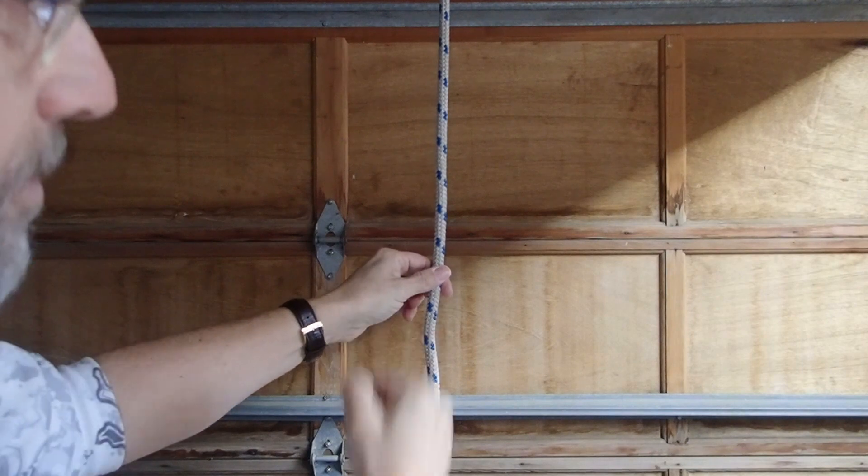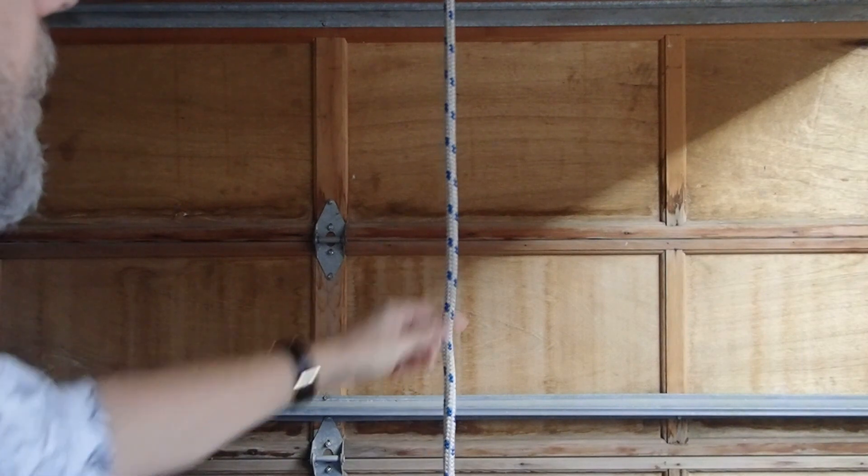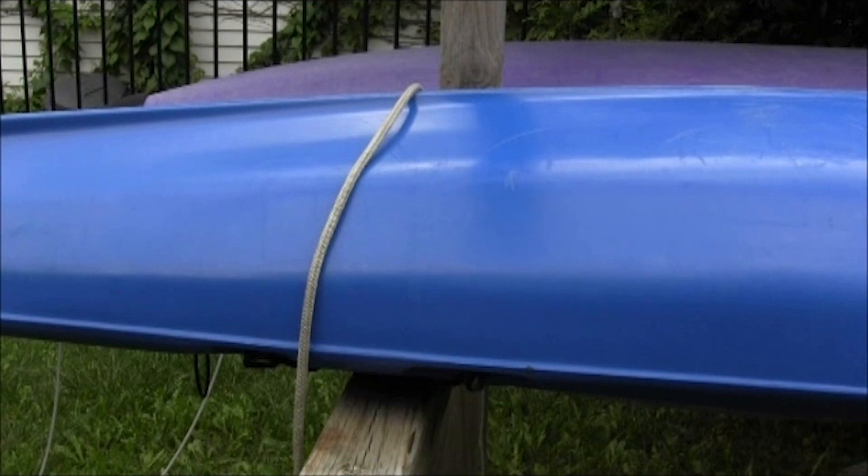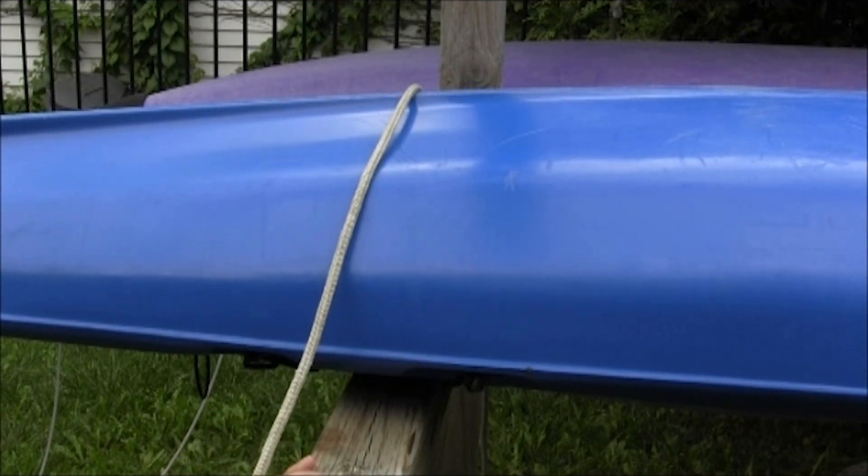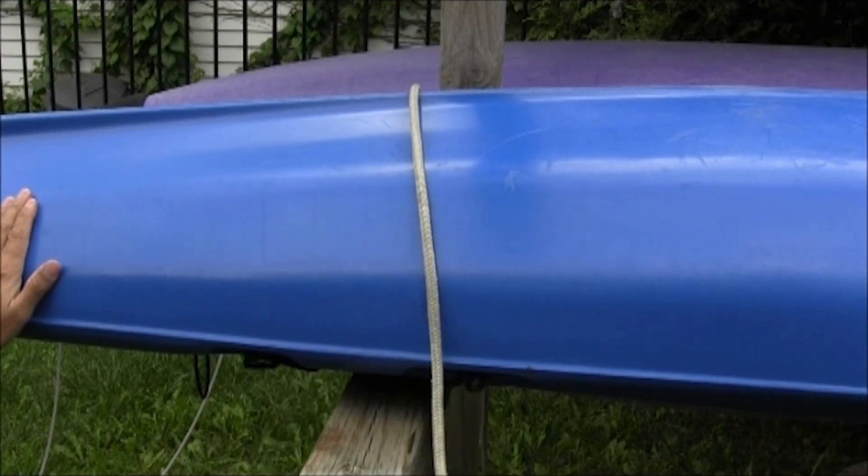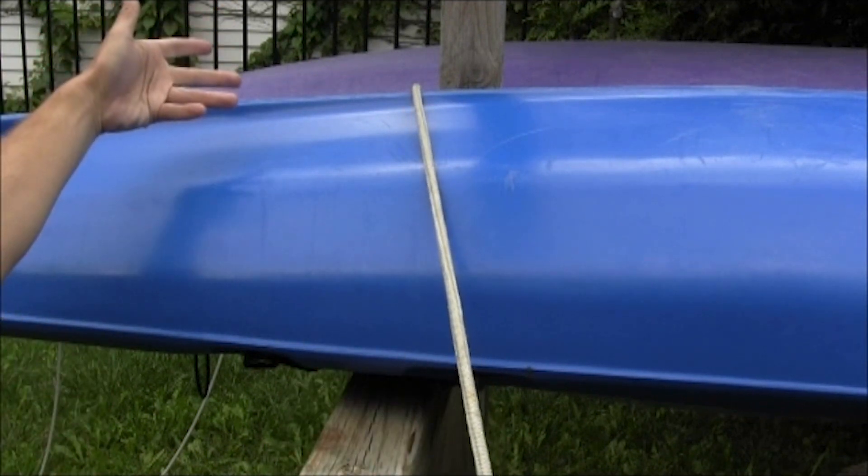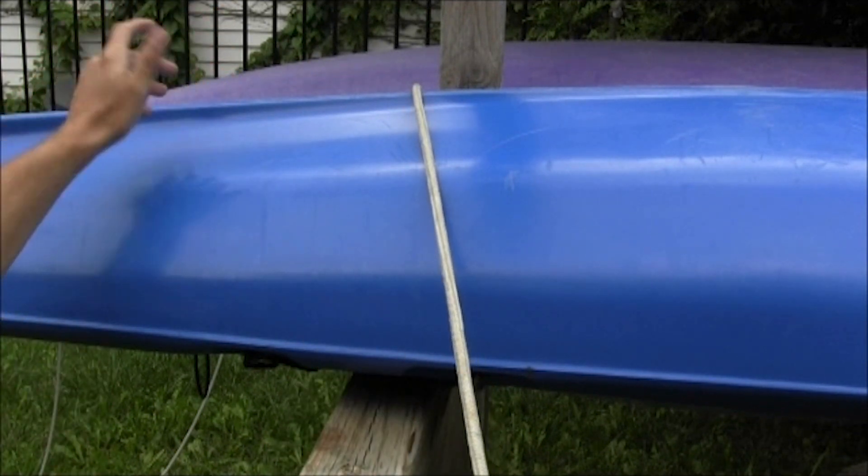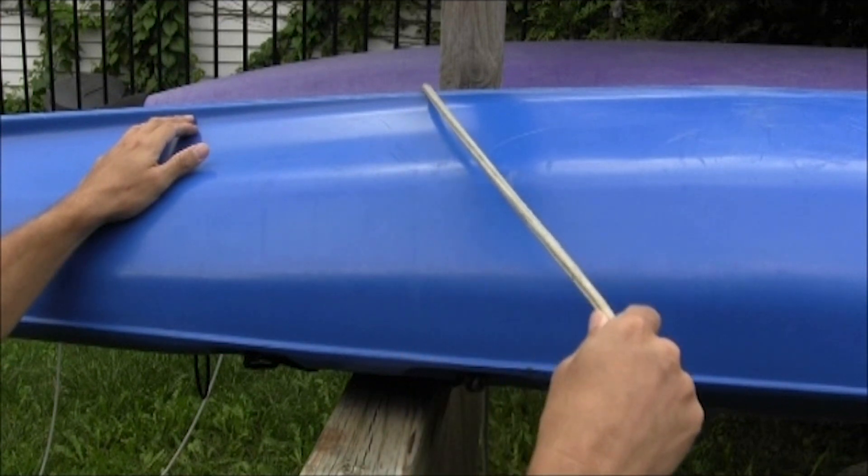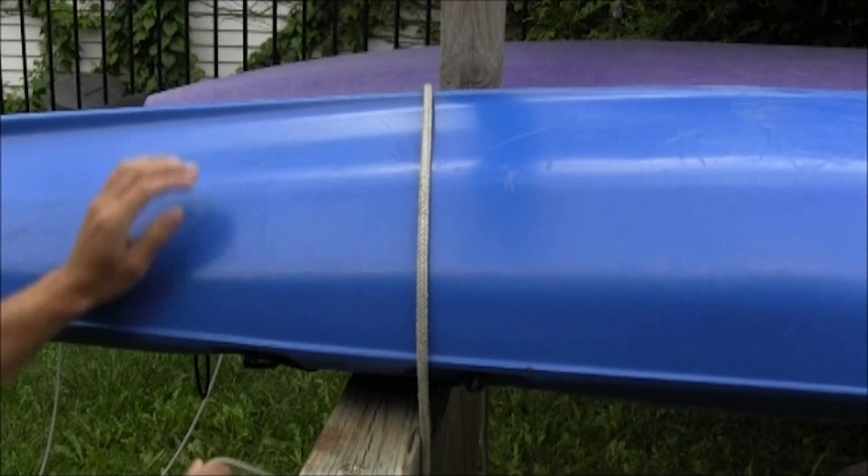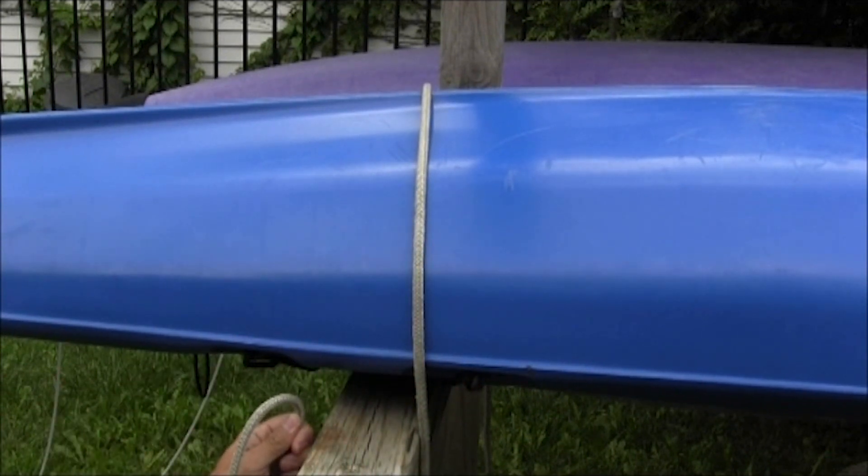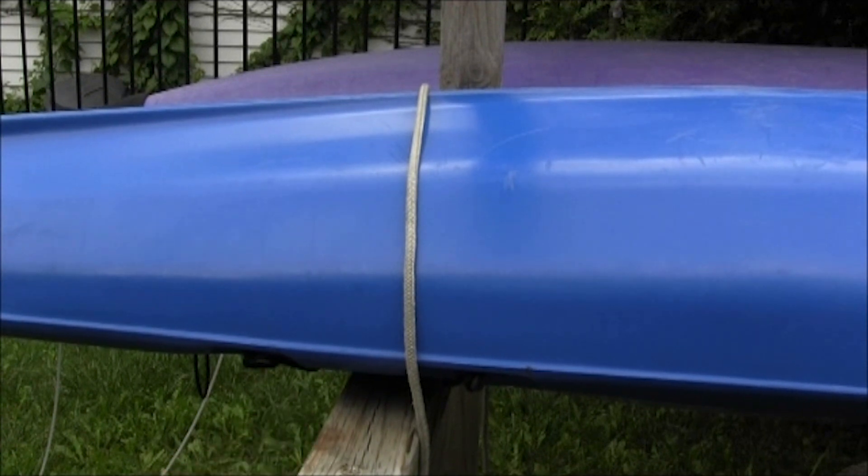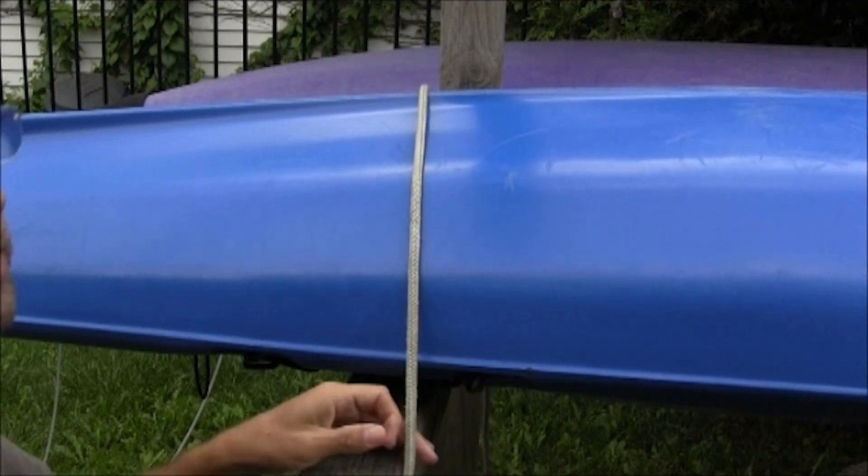The trucker's hitch is using rope to create a pulley, and the purpose is to make a very tight line. If we were to attach a kayak onto roof racks, we could tie one end of the rope onto the roof racks with a clove hitch as a starting knot, then come down around the other side of the roof rack. But how do we really get a tight rope? The trucker's hitch is what will help us get that tight rope.